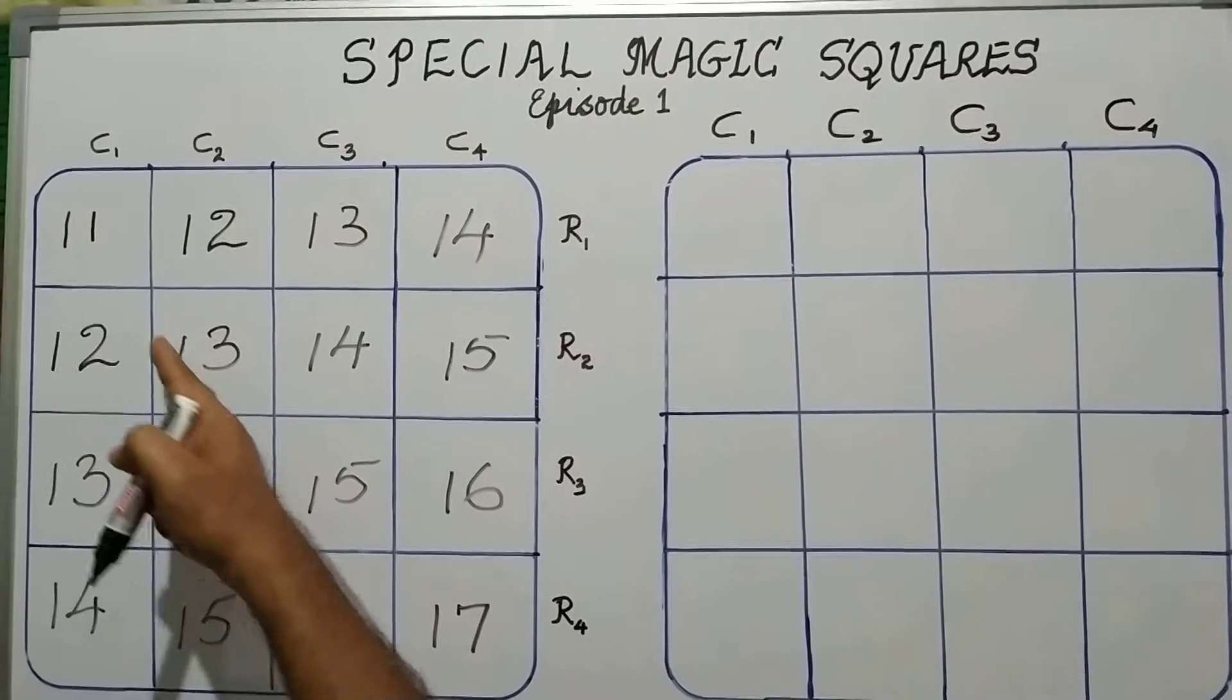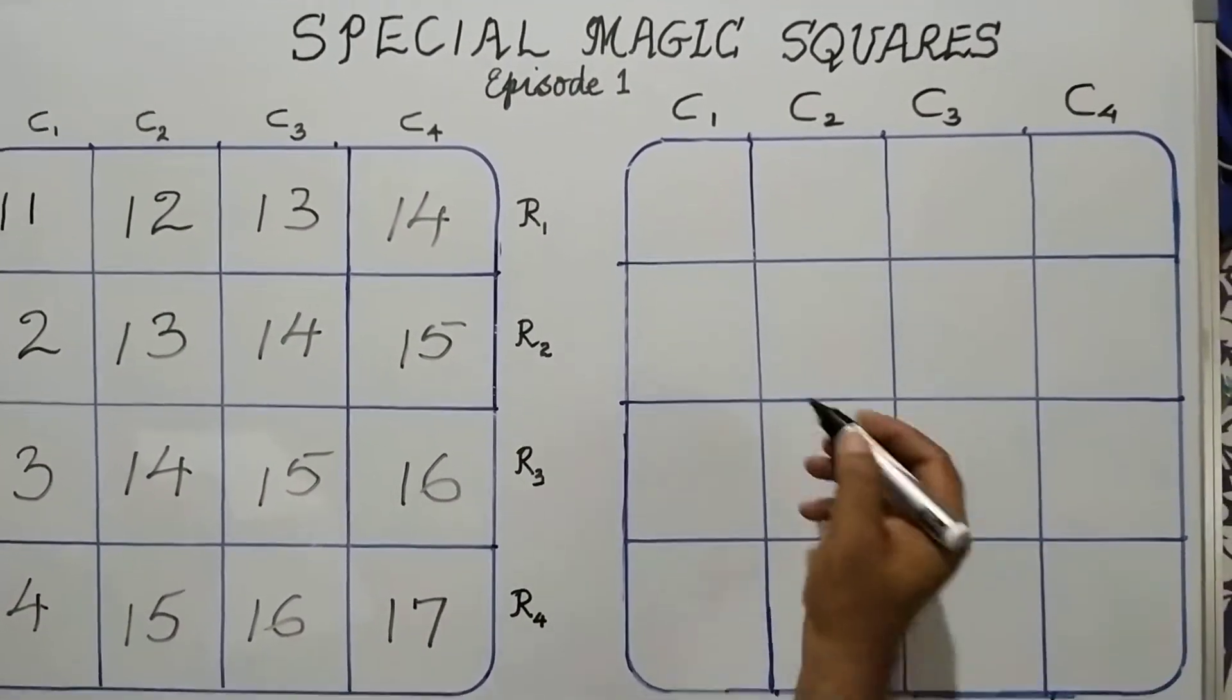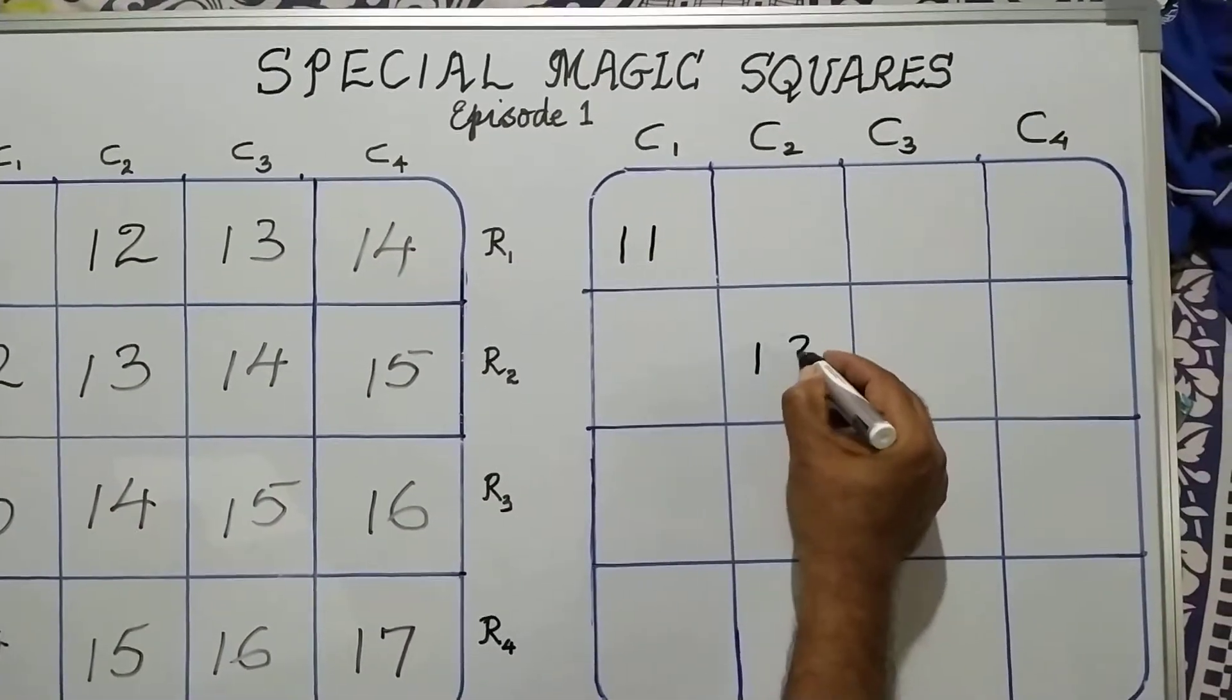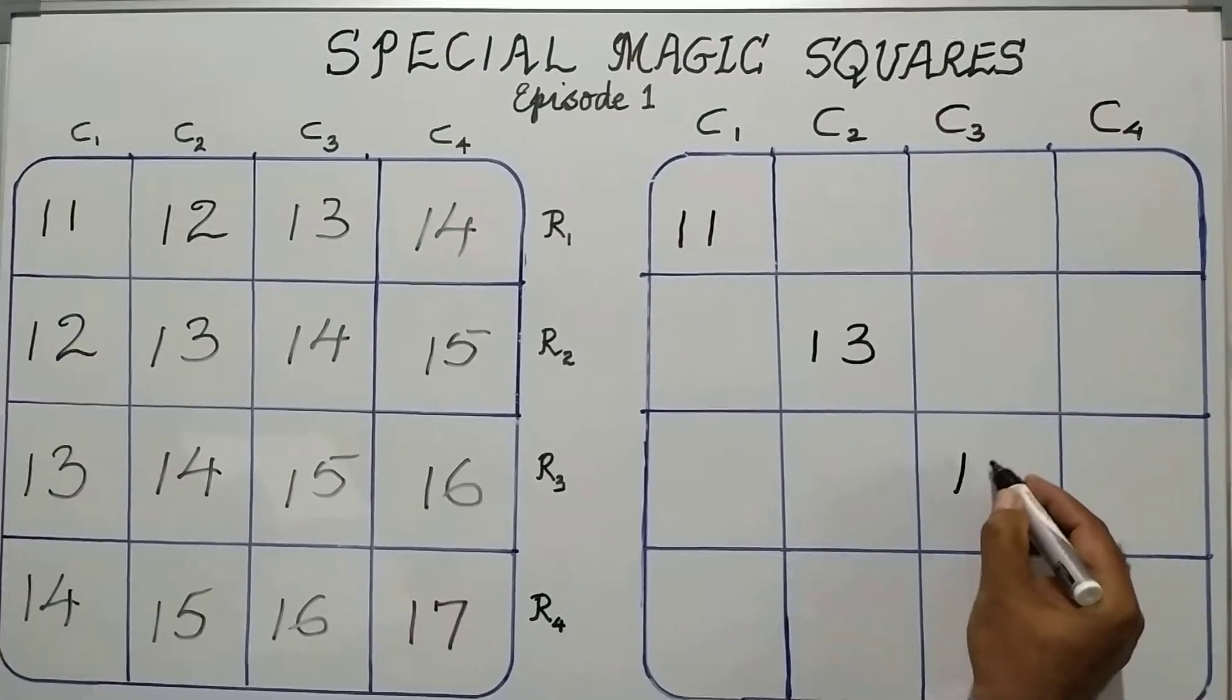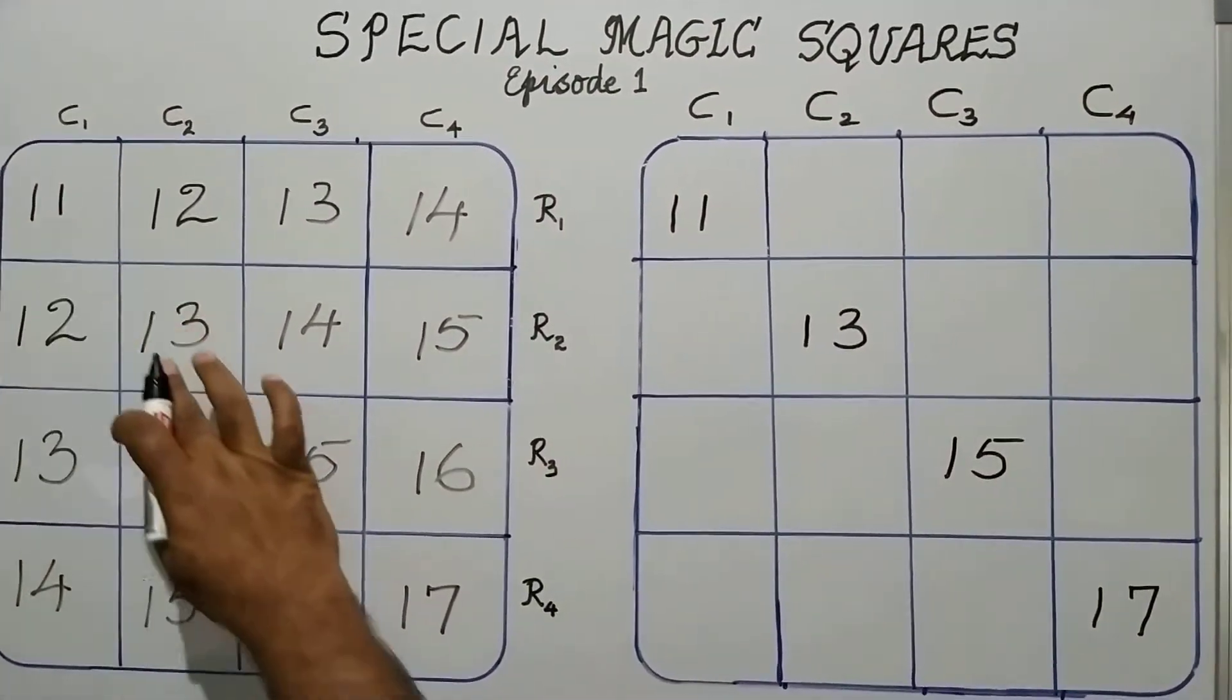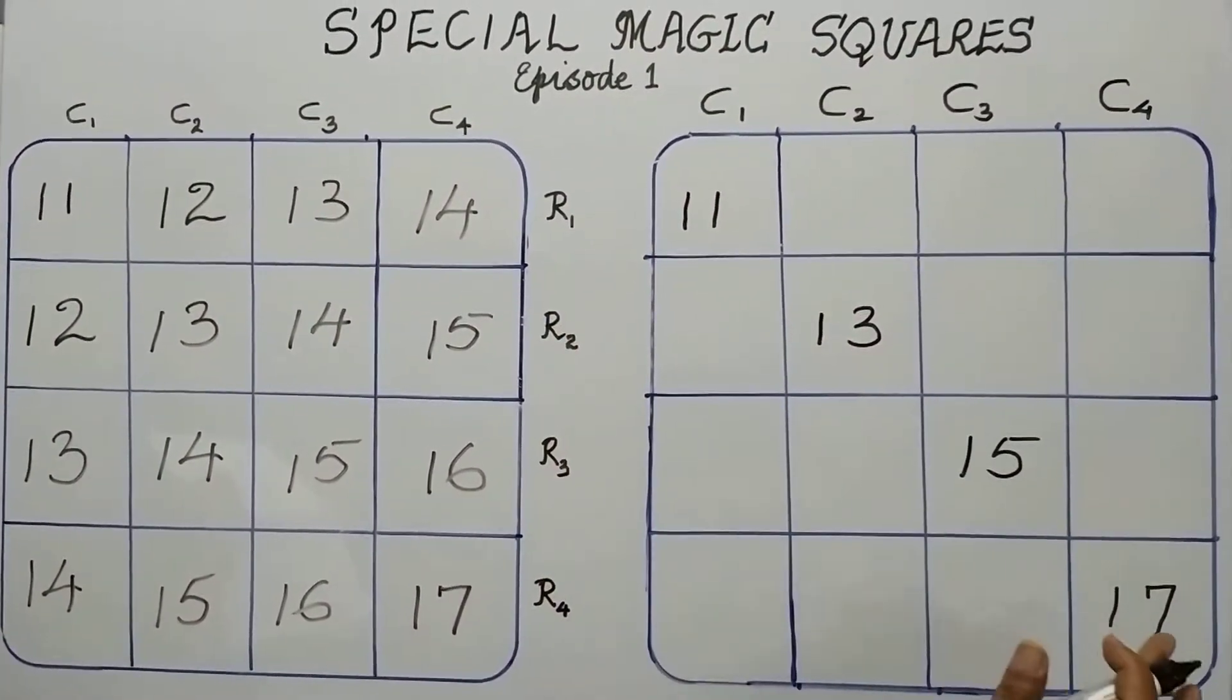From the base square, the principal diagonal elements, I will retain them as is: 11, 13, 15, and 17. So, the principal diagonal elements from the base square, I am retaining as is.